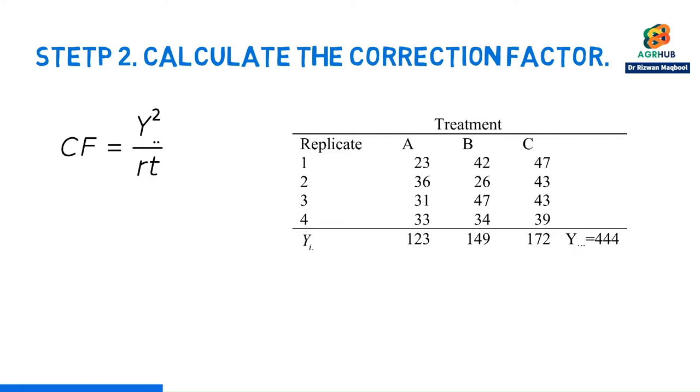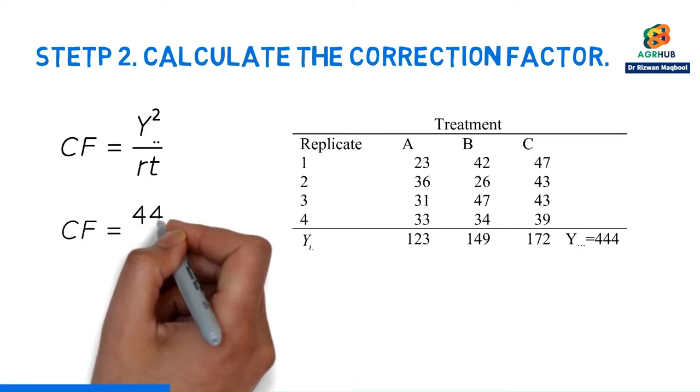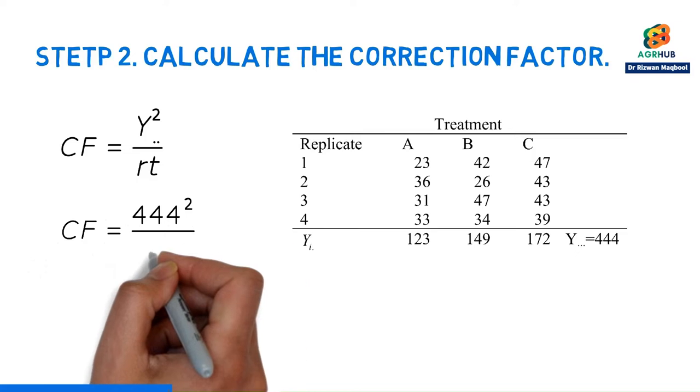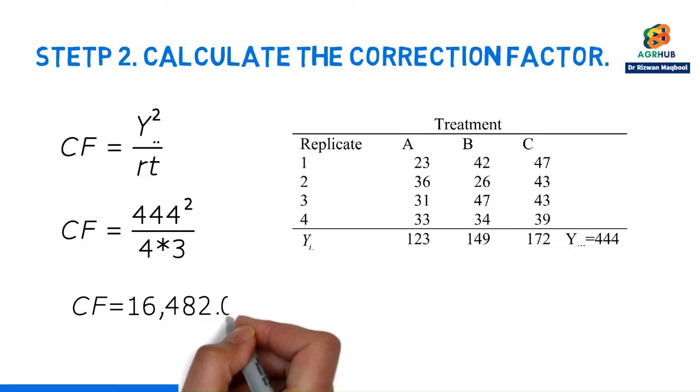The fastest way to get that is by adding the column totals together, 123 plus 149 plus 172 gives us 444. We then need to square that number and divide by 12, as there are three columns with four values in each, which gives us 16,482.0. So, the correction factor is done.